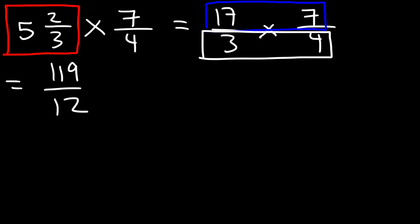And then we can multiply 3 and 4 which will give us 12. So now we've got to convert this fraction back to a mixed number, so let's use long division. Now 12 doesn't go into 11, so we need to see how many times 12 goes into 119.